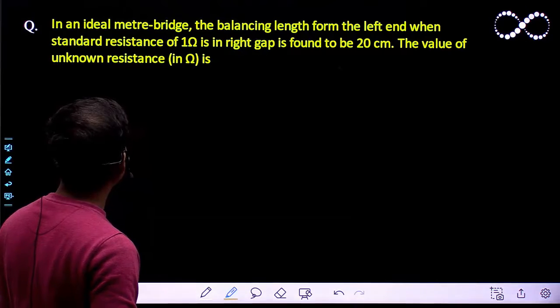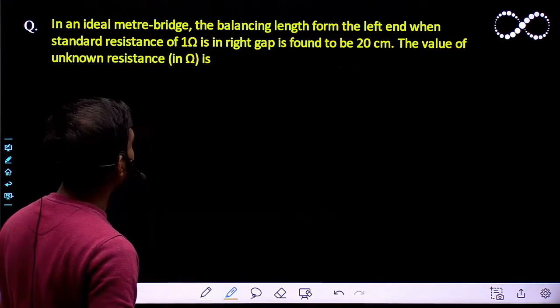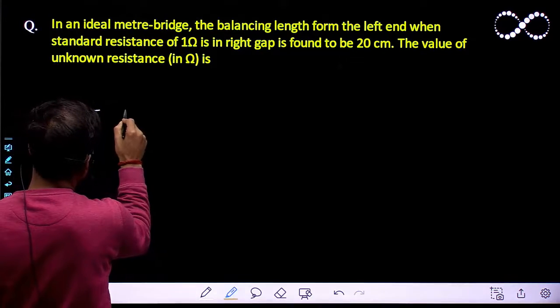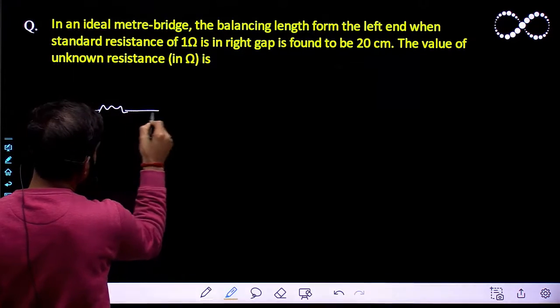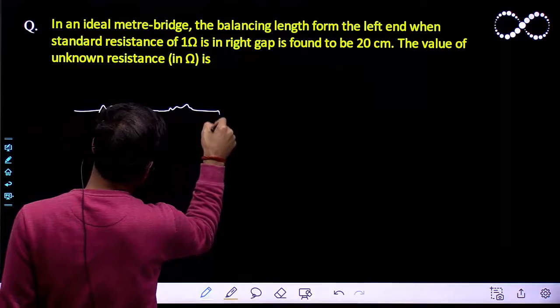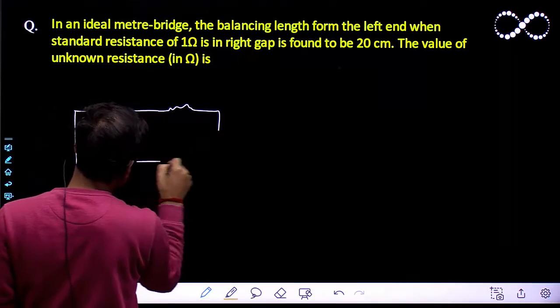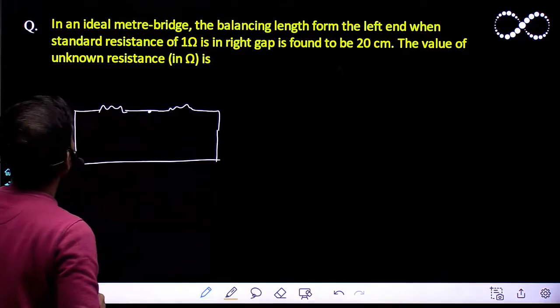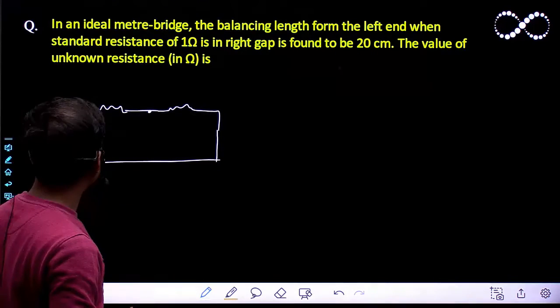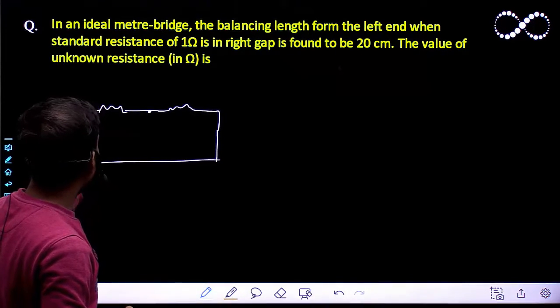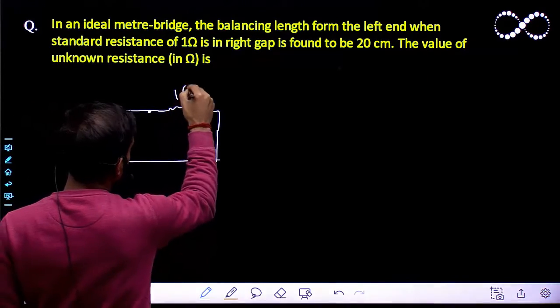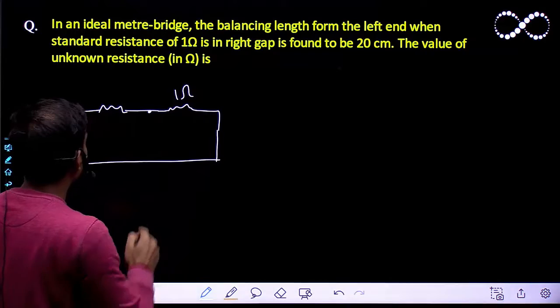So it is saying that in an ideal meter bridge, the balancing length from the left end when the standard resistance of 1 ohm is in the right gap, so this is 1 ohm here, is found to be 20 cm.